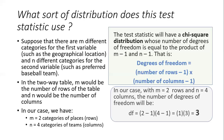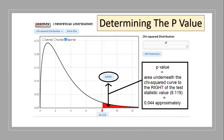Now that we know the distribution and have our test statistic, we can find the p-value. Just like a chi-squared test for goodness of fit, this is always a right-tailed test — larger values give evidence against the null hypothesis. Using technology (the StatKey app), we find the area to the right of 8.119 on a chi-squared distribution with 3 degrees of freedom is approximately 0.044. That is our p-value.